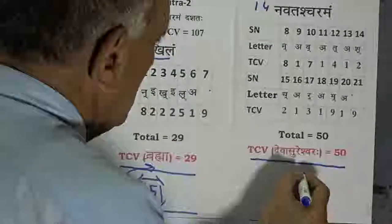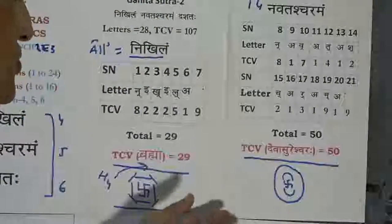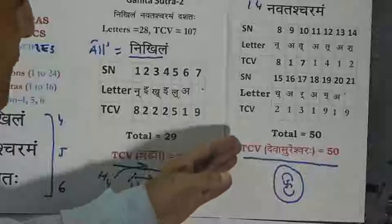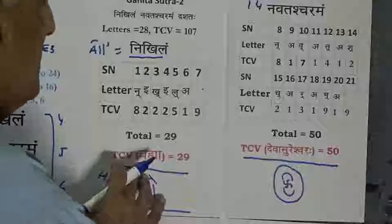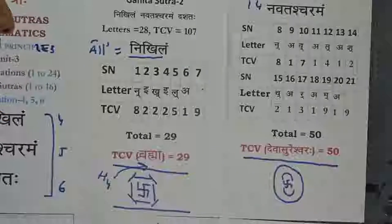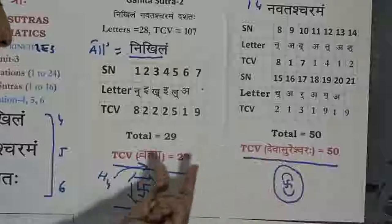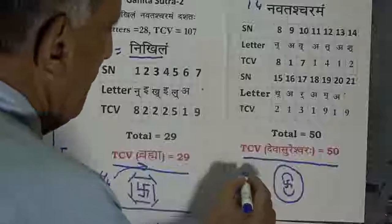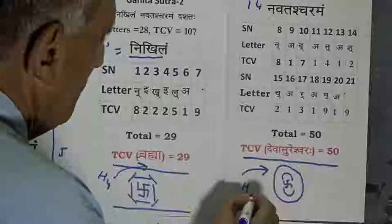Deva Sureshwar is the designation of the transcendental Lord Shiv — one of the transcendental designations from Shiv Sahasranam Stotram. It is of TCV value 50. Therefore this formulation, when taken in continuity of Navasthacharamam, will be taking us from Brahma to Deva Sureshwar — that is, from Hypercube 4, the creator of space, to Hypercube 5, the transcendental space. So it is a reach from H4 to H5.